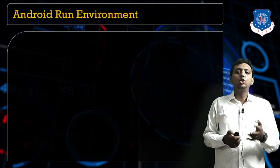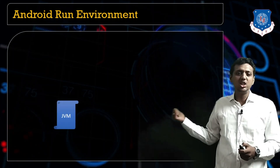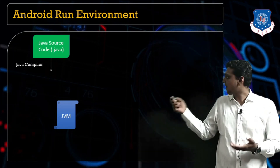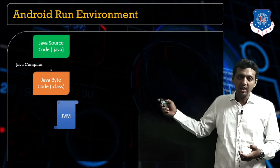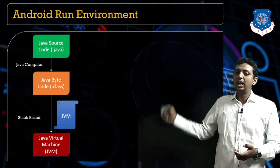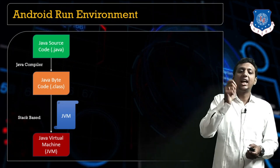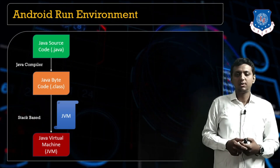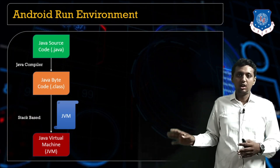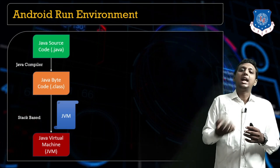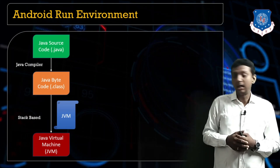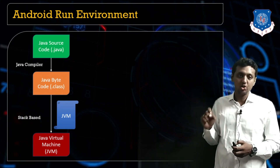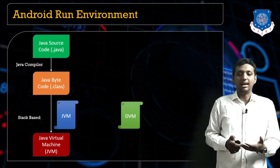Let me talk about the Android runtime environment and how the JVM works. The JVM first takes the Java code, compiles it into a class file, and from the class file the code goes into the JVM, which converts it into machine-level instructions. The JVM is based on a stack-based architecture.